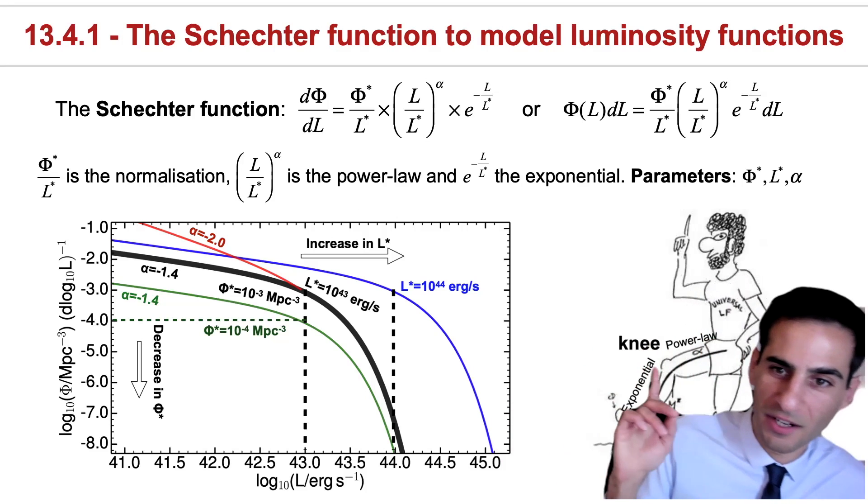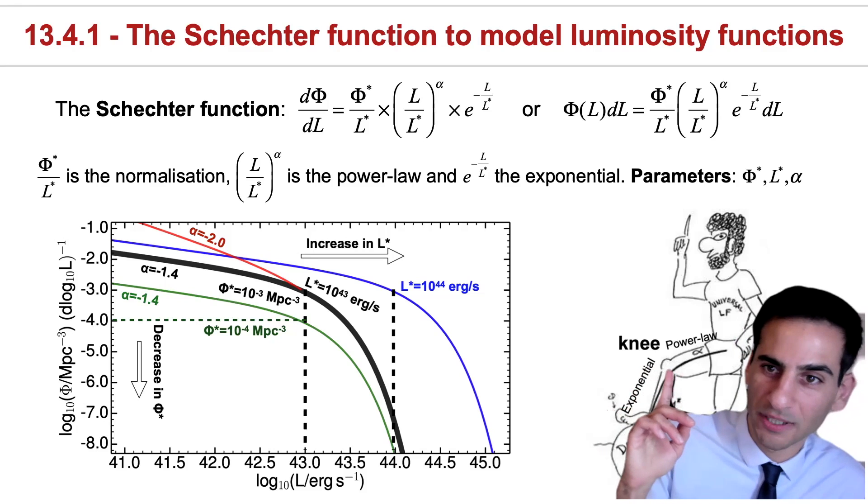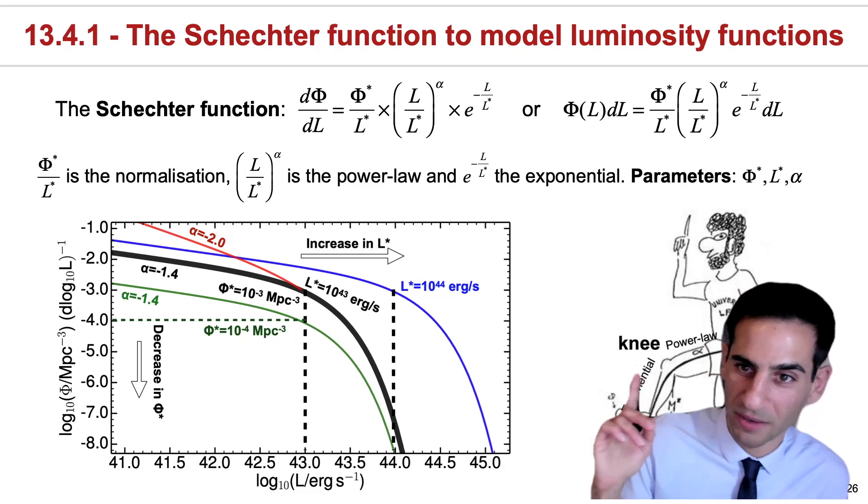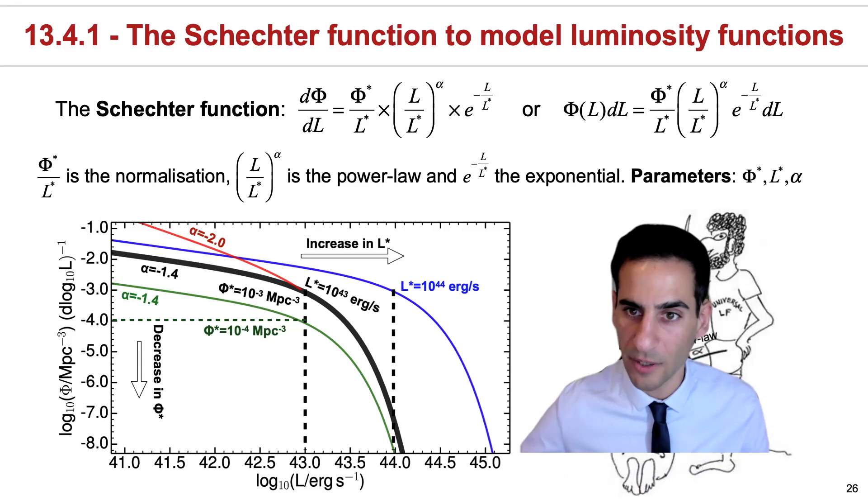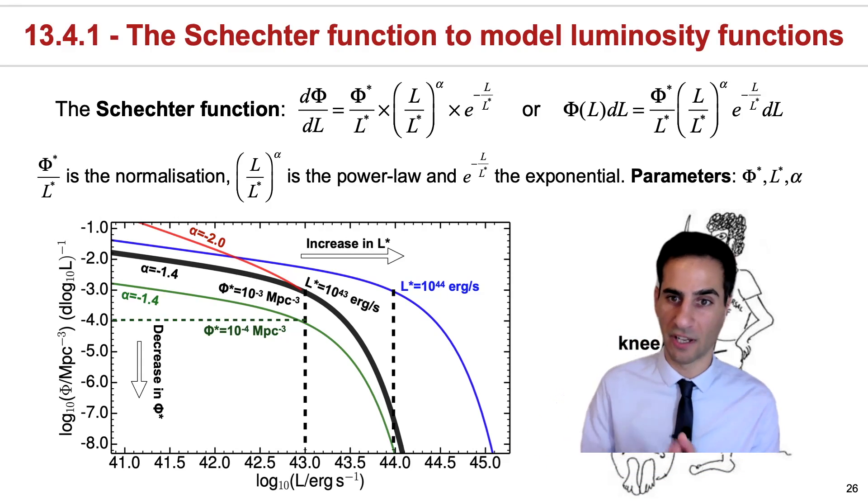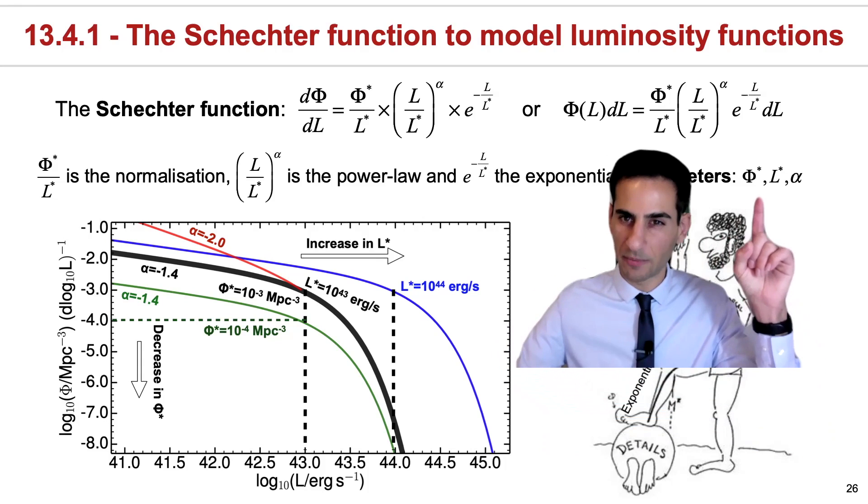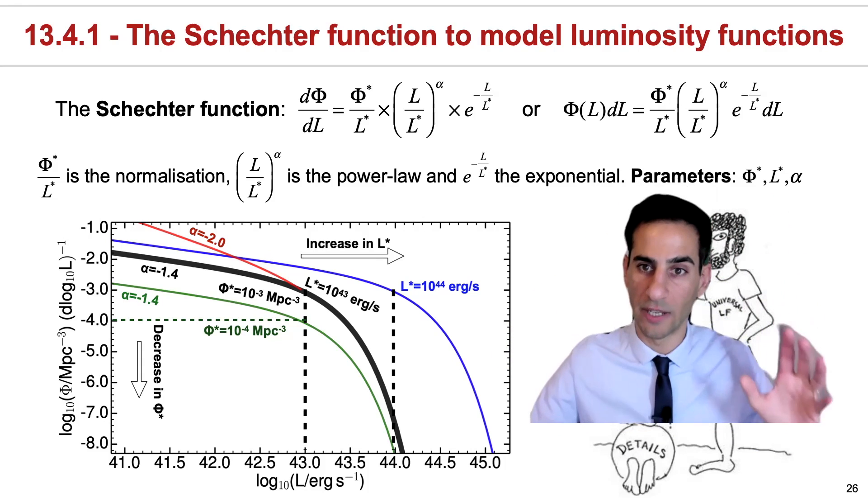Now, I'll explain why this guy is here with his knee. This is the actual guy, Paul Schechter, that actually came up with this function to explain galaxy luminosity functions. But for now, let's try to look at the function and the behavior of the function itself and these three different parameters and what they mean in reality.